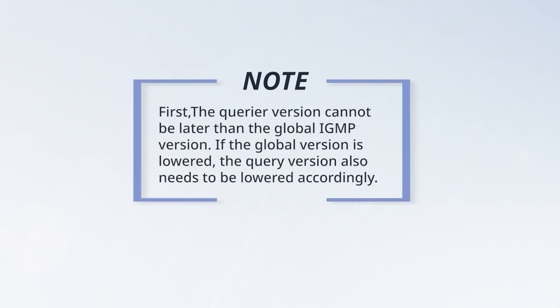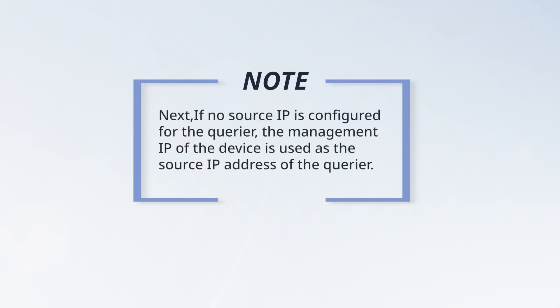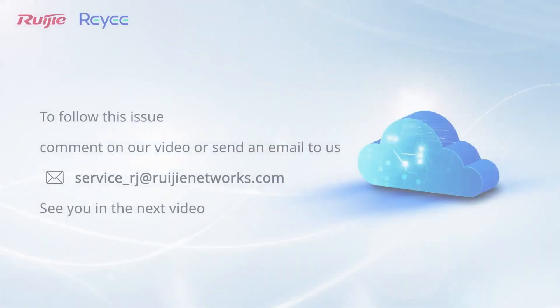Please note: first, the querier version cannot be later than the global IGMP version. If the global version is lowered, the querier version also needs to be lowered accordingly. Next, if no source IP is configured for the querier, the management IP of the device is used as the source IP address of the querier. To follow up on this issue, comment on our video or send an email to us. See you in the next video.